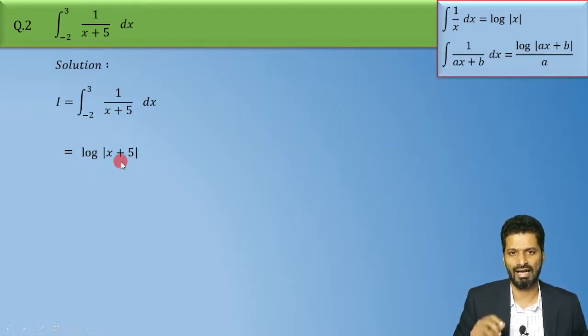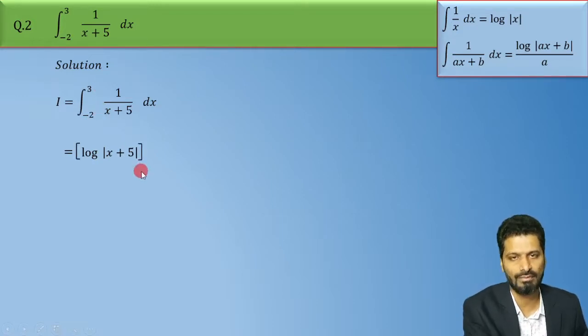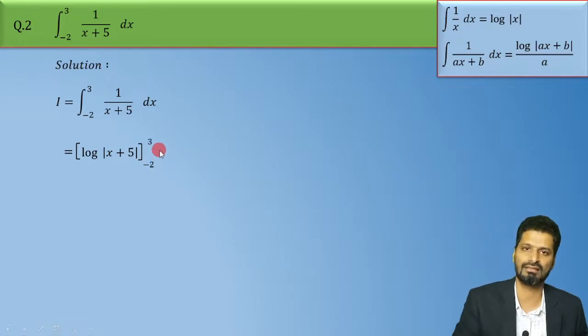So this is your final integral and kyunke yaha par limits bhi di hui hai aapko, to isko hum kya karenge, square bracket mein likhenge and lower limit minus 2, upper limit 3.